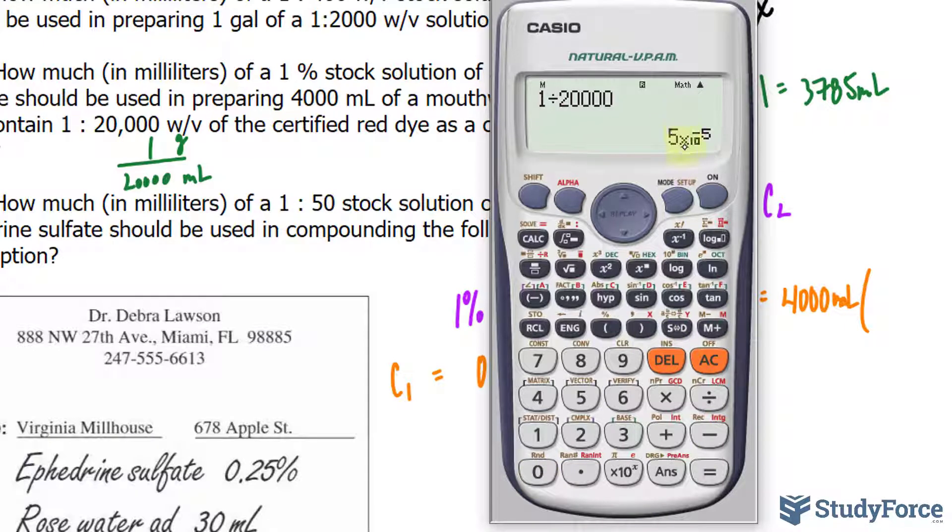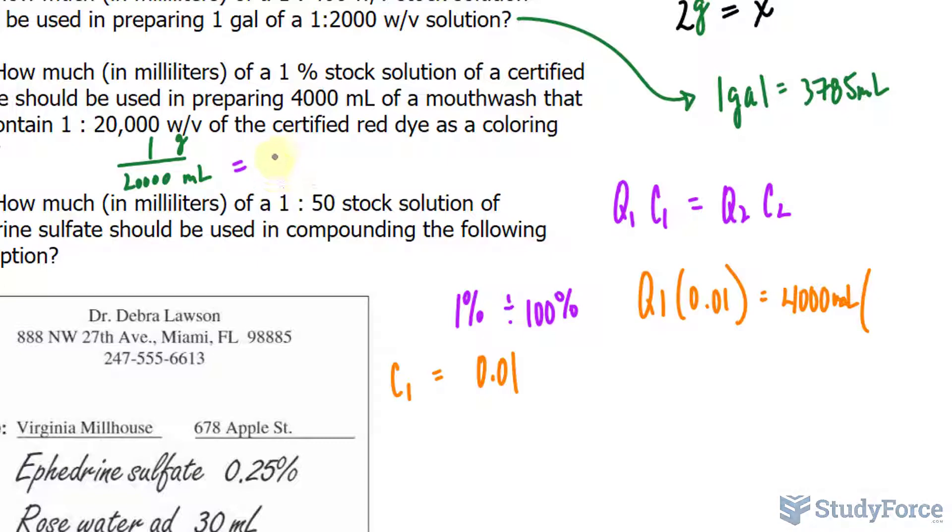And it is 5 times 10 to the power of negative 5, which when written as a decimal is 0.00005, and that is the concentration of the final solution, 0.00005, and that's a unitless number.